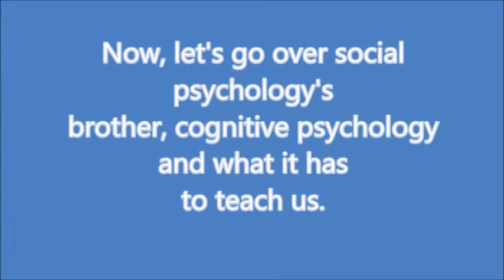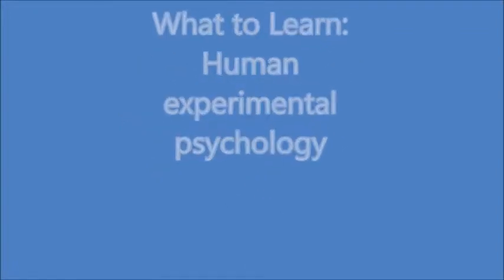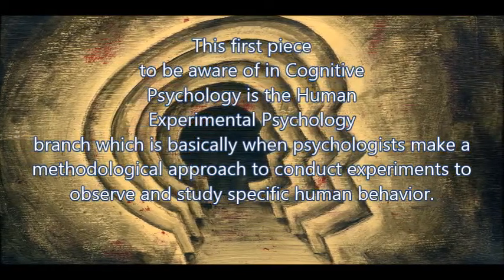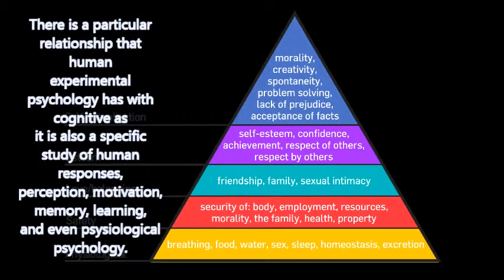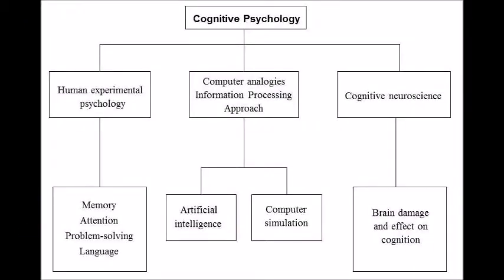Now let's go over social psychology's counterpart, cognitive psychology, and what it has to teach us. Second topic of interest: understanding the process of attention, language use, memory, perception, thinking, etc. The first piece to be aware of in cognitive psychology is the human experimental psychology branch, where psychologists make a methodological approach to conduct experiments to observe specific human behavior. It is also a specific study of human responses such as perception, motivation, memory, learning, and even physiological psychology. Cognitive psychology also has its own separate branches, such as human experimental psychology, computer analogies like information processing, and cognitive neuroscience.